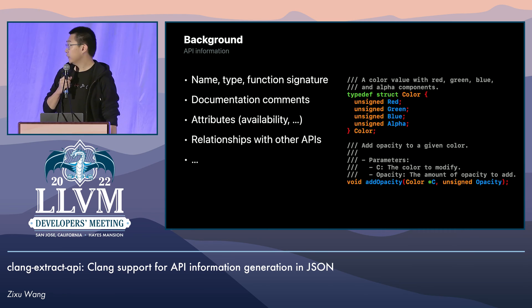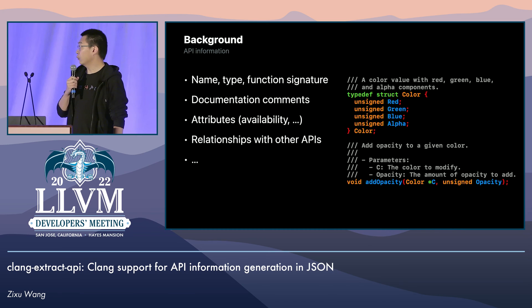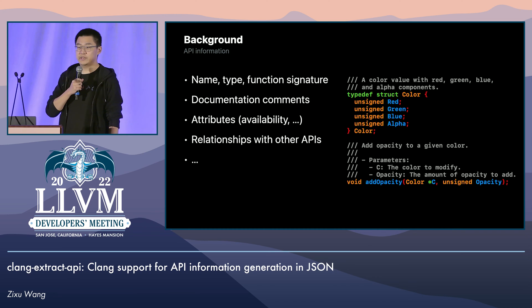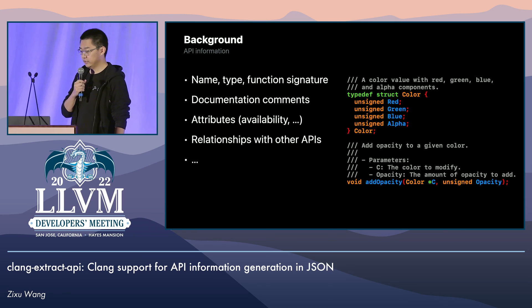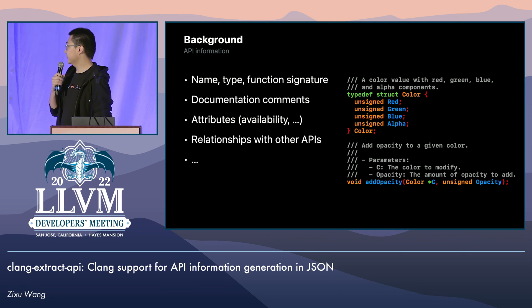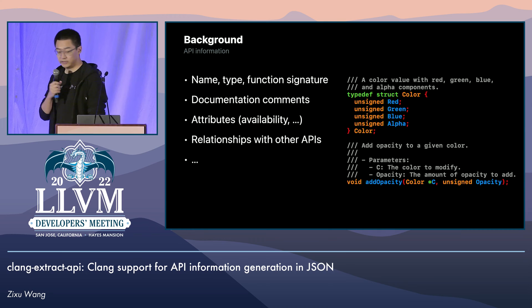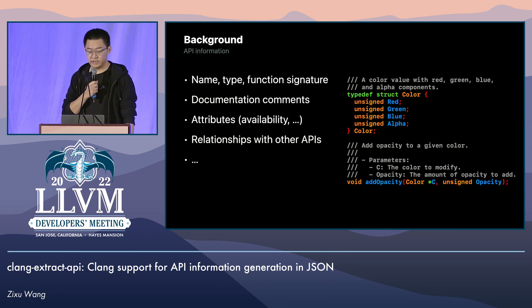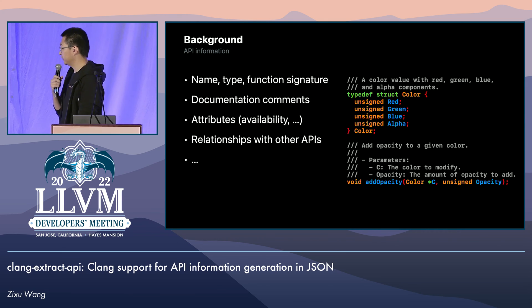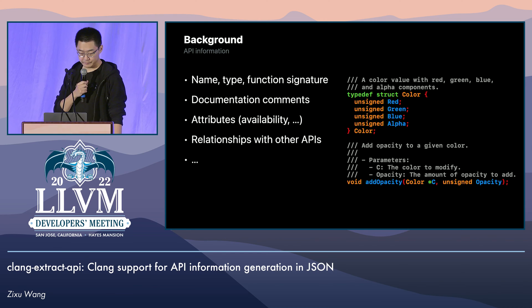First of all, let's get started with some background. What is this API information that I'm talking about? For example, here I have a simple library of RGBA colors, and I'm providing these APIs: a struct representation and a function called addOpacity.